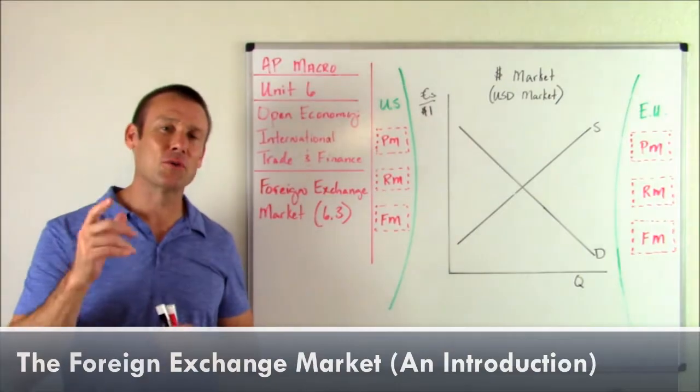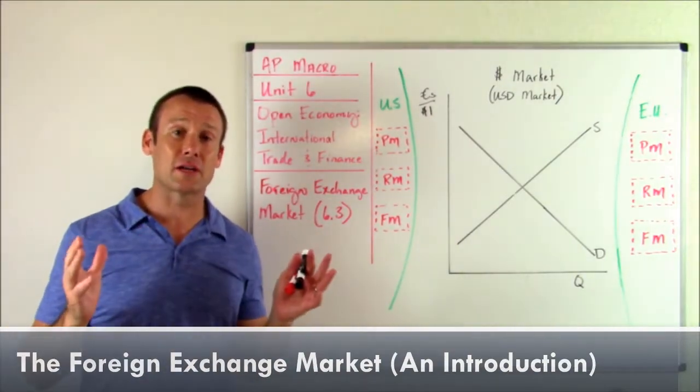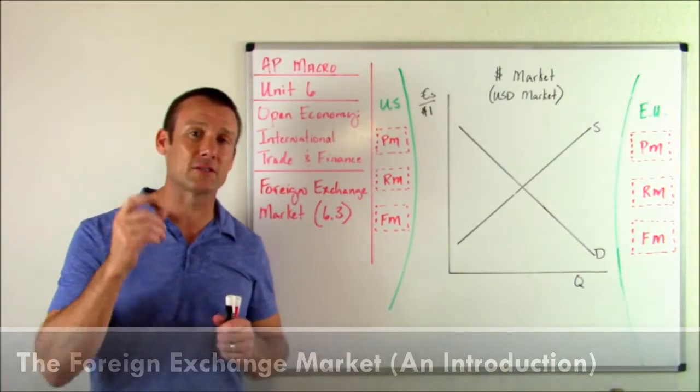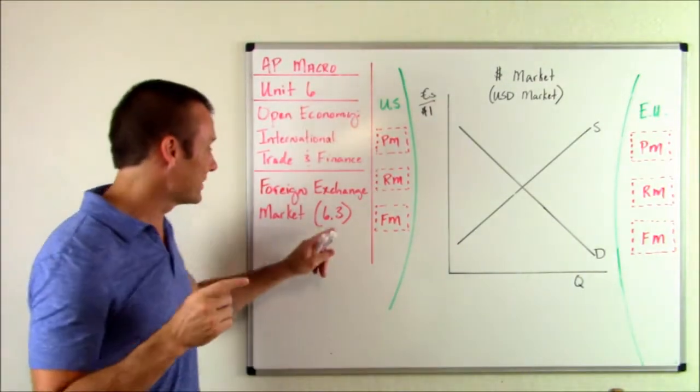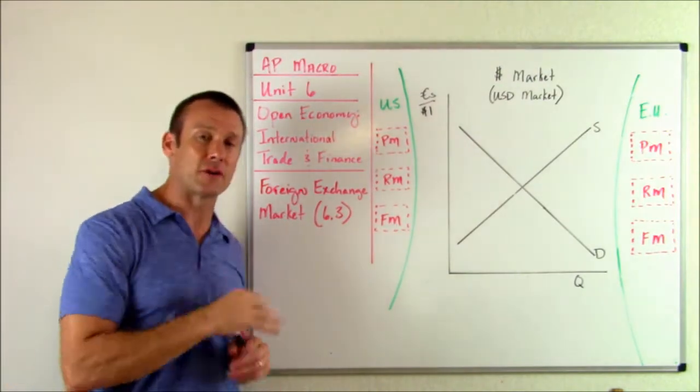Hey everybody, this is AB Macro, Unit 6, and we've got the Open Economy, International Trade and Finance. We're doing Subunit 6.3, the Foreign Exchange Market.